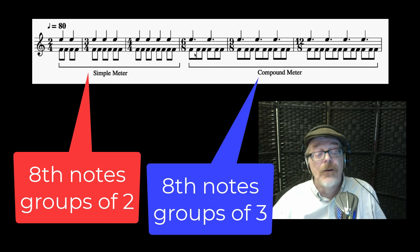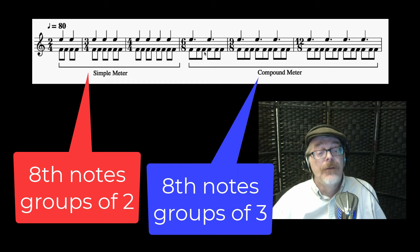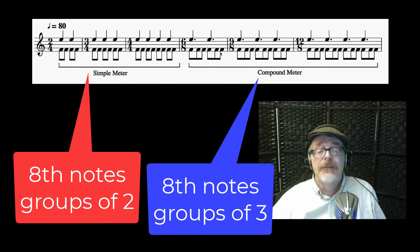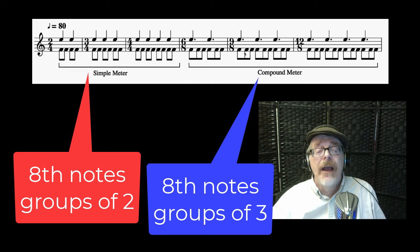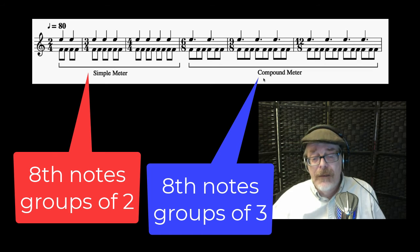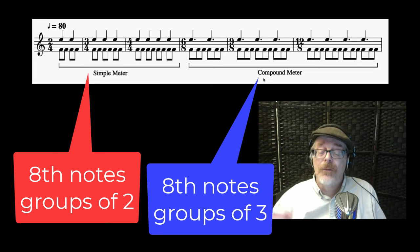In compound meter the eighth notes are in groups of 3: 1, 2, 3, 4, 5, 6 — like a waltz. 9/8 and 12/8 are the same thing; the eighth notes are in groups of 3. So: compound meter — groups of 3; simple meter — groups of 2.